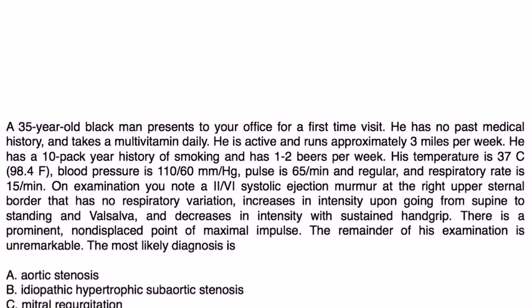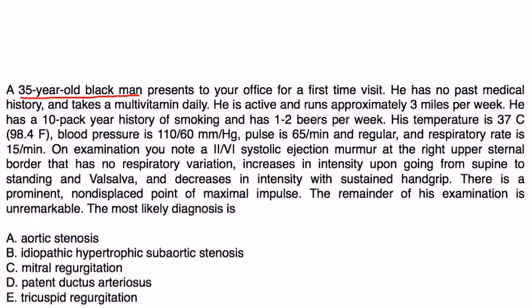Let's take a look at a couple clinical vignettes. A 35-year-old black man presents to your office for a first-time visit. He has no past medical history and takes multivitamins daily. He's active and runs approximately 3 miles a week. He has a 10-pack year history of smoking and 1-2 beers a week. Temperature is 98, blood pressure is 110, pulse is 65 and regular, and respiratory rate is 15. On exam, you note a 2 out of 6 grade systolic ejection murmur at the right upper sternal border that has no respiratory variation, increases in intensity upon going from supine to standing and Valsalva, and decreases in intensity with sustained hand grip. There is a prominent non-displaced point of maximal impulse. The remainder of his exam is unremarkable. Most likely diagnosis is.